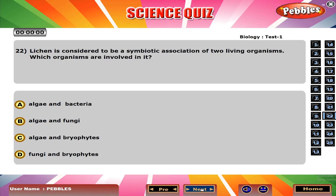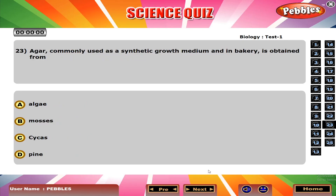Lichen is considered to be a symbiotic association of two living organisms. The organisms involved are Algae and Fungi. Agar, commonly used as a synthetic growth medium and in bakery, is obtained from A. Algae.